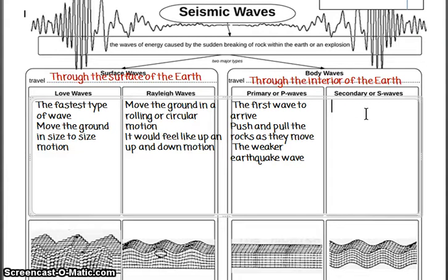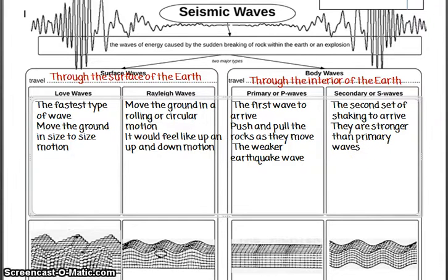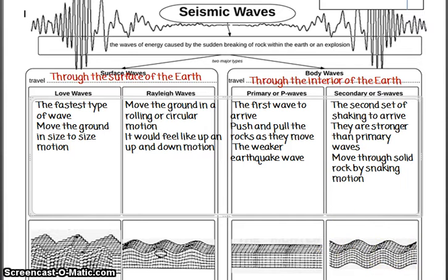Secondary waves arrive directly after the primary waves — they are the second set of shaking to arrive, and they are stronger than primary waves. A lot of times people think they survived the primary wave and carry on, not knowing there's about to be a second, stronger set of shaking coming. The secondary waves move through solid rock in a snaking motion — if you look at the picture, you can see the rock undulating side to side.